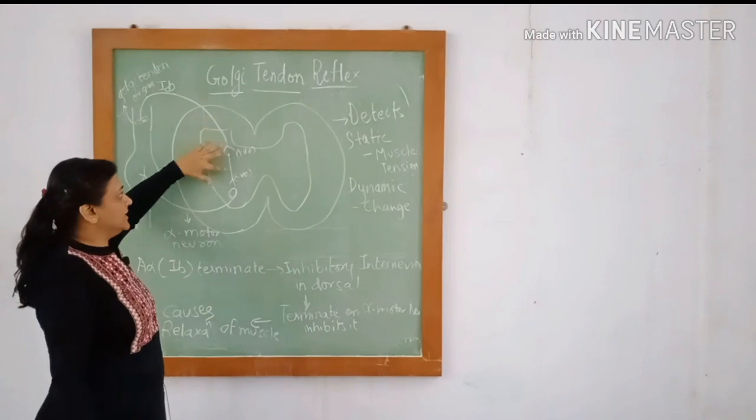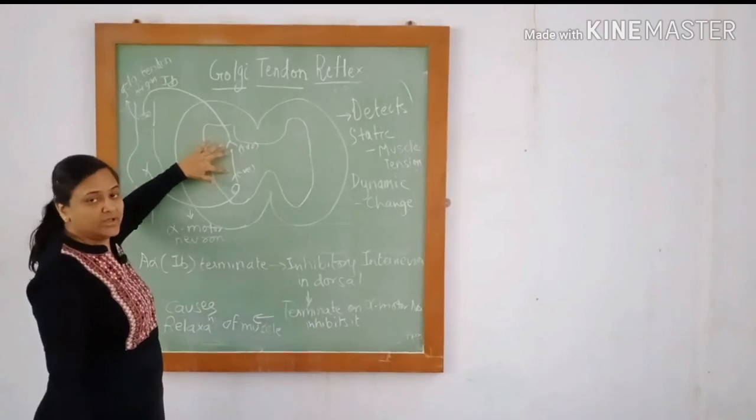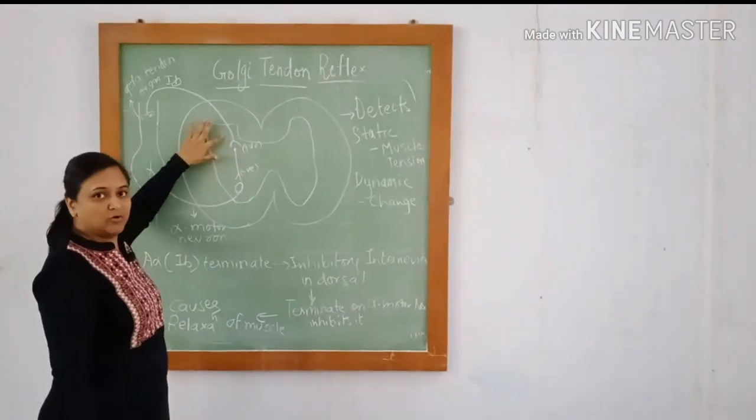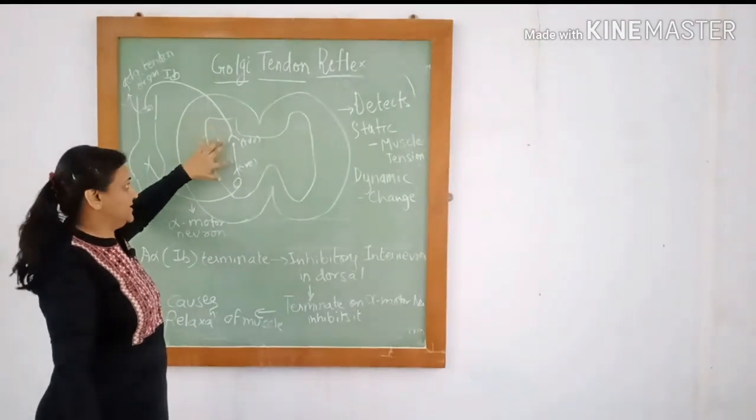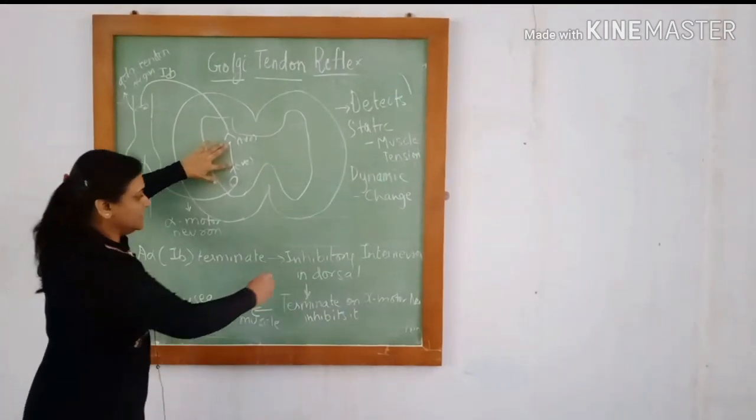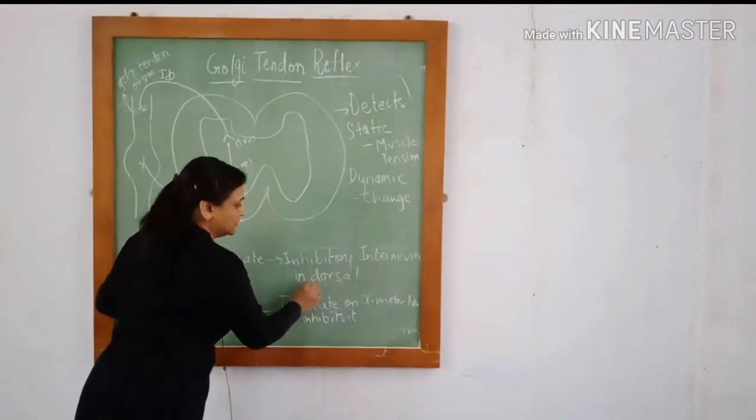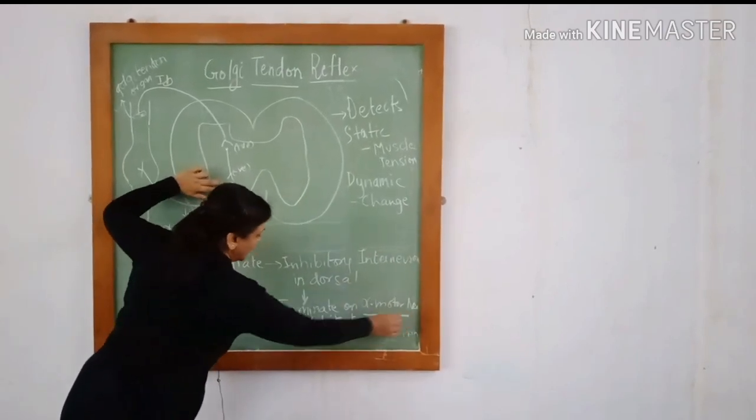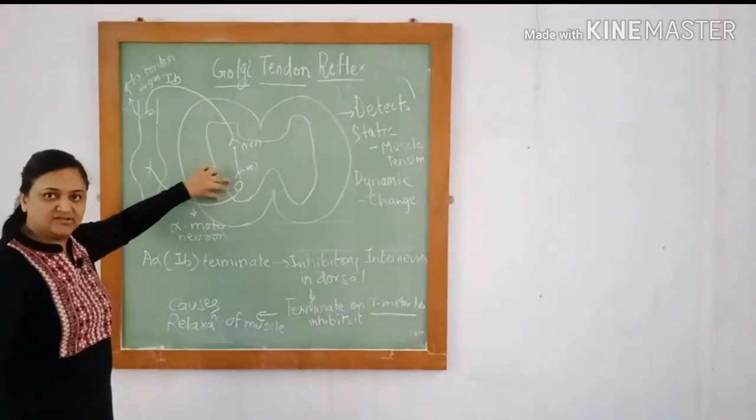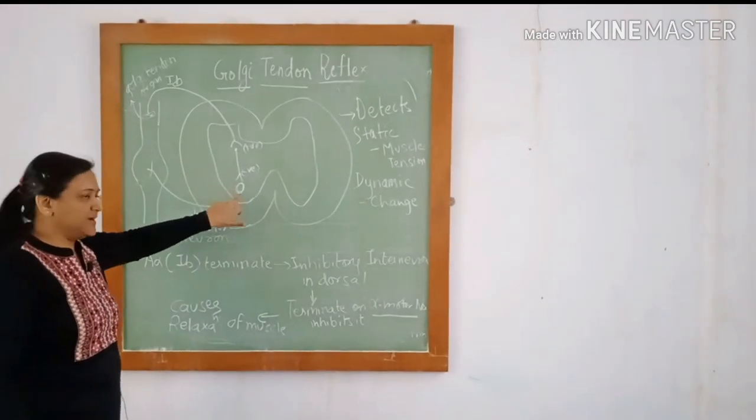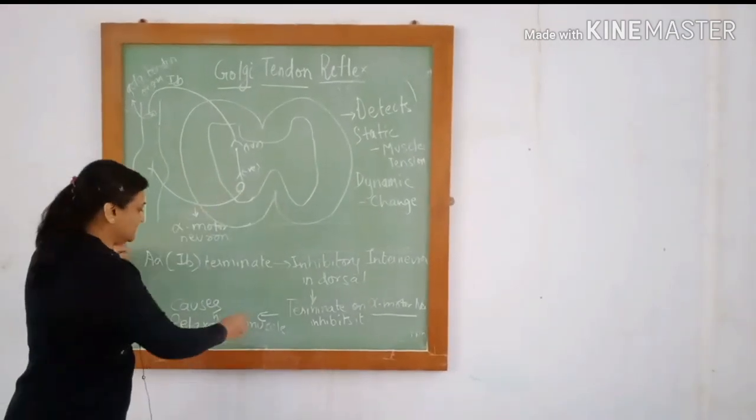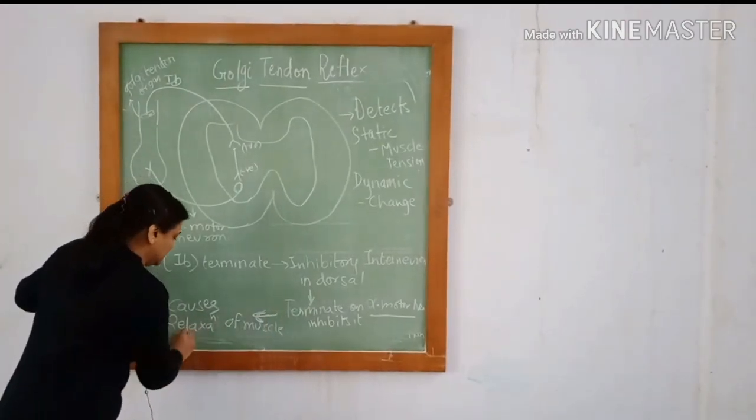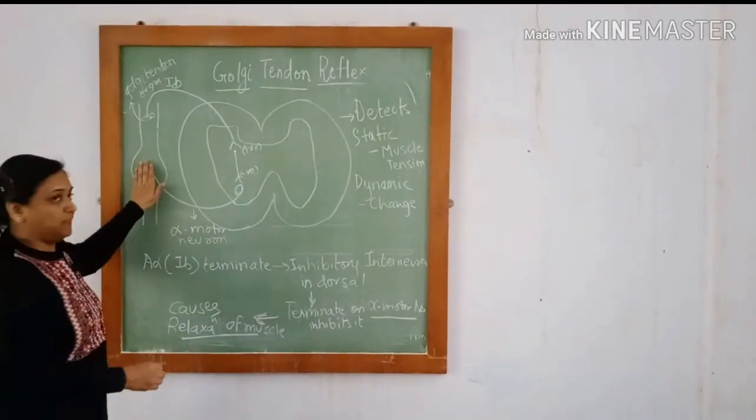They innervate the intermediate interneuron in the dorsal horn and activate it. This inhibitory interneuron in the dorsal horn in turn terminates on the alpha motor neuron in the anterior horn and inhibits it. Thus, this leads to relaxation of the muscle fibers.